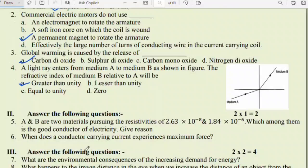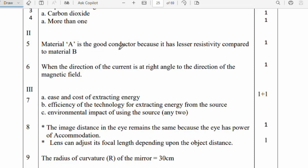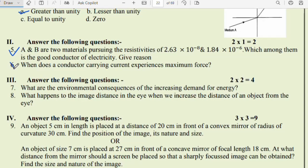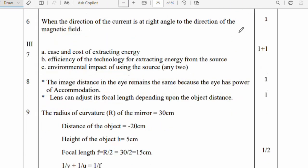Next, second main answer the following questions. Two questions will be there. Question 5: A and B are two materials having resistivity of 2.63 × 10^-8 and 1.84 × 10^-6. Which among them is a good conductor of electricity? Give reason. Material A is the good conductor because it has lesser resistivity compared to material B. Question 6: When does a conductor carrying current experience maximum force? When the direction of current is at right angle to the direction of the magnetic field.